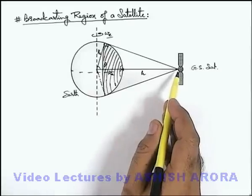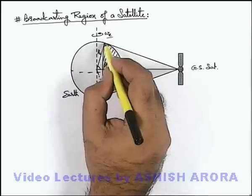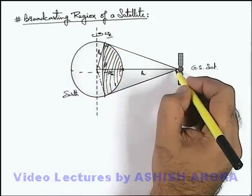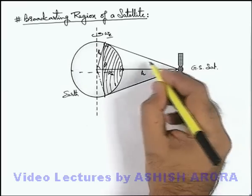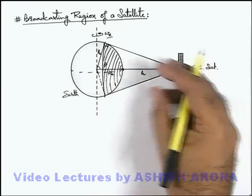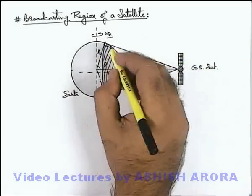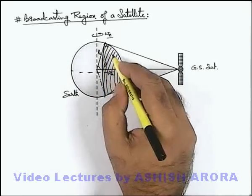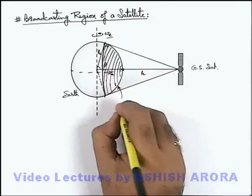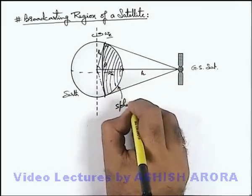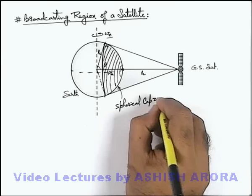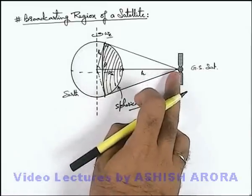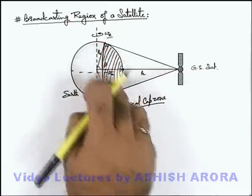Now if we wish to find out the broadcasting region of this satellite, we just draw the tangents to the earth from this satellite. If we talk about the envelope of all these tangents, this will make a conical zone, and this conical zone will be spread over a surface — a spherical cap zone — in which the signals directly transmitted from this geostationary satellite can be received.